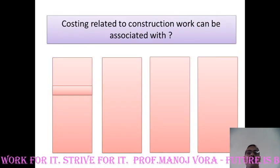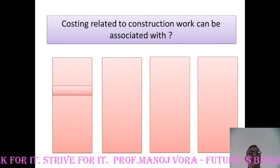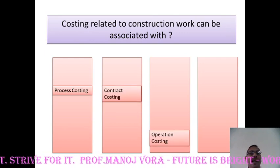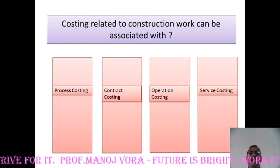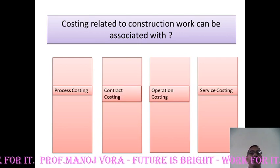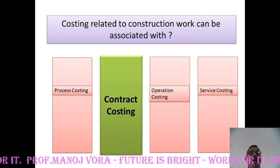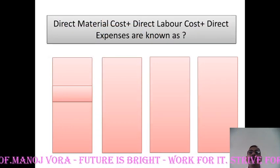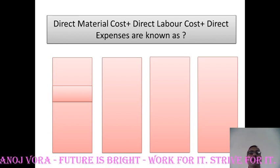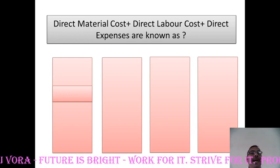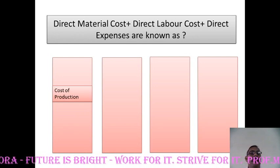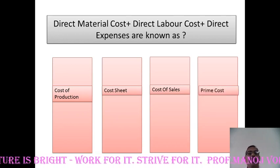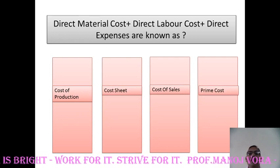Costing related to construction work can be associated with — process costing, contract costing, operation costing, or service costing. Your right answer should be contract costing. Direct material cost plus direct labour cost plus direct expenses — all three put together can be termed as cost of production, cost sheet, cost of sales, or prime cost. Your answer has to be prime cost.